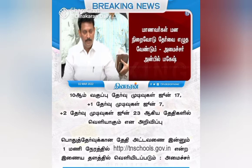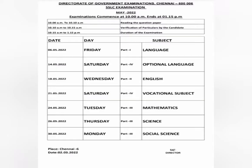If you look at the timetable, for 10th standard: May 6th is the first subject, Language. The second subject is Optional Language on May 14th. May 18th is English. May 21st is Vocational Subject. May 24th is Mathematics. May 26th is Science. May 30th is Social.